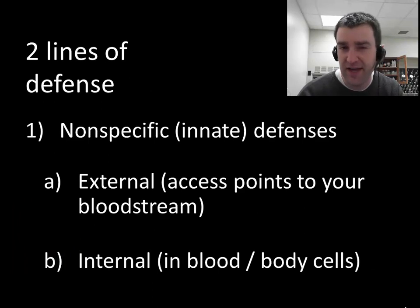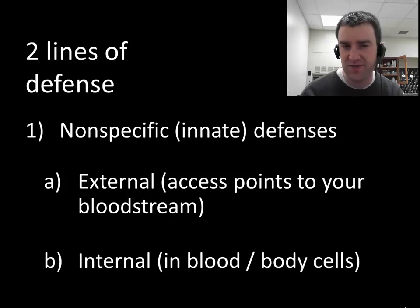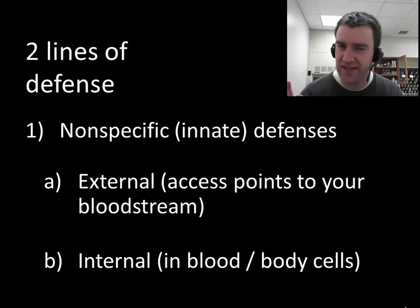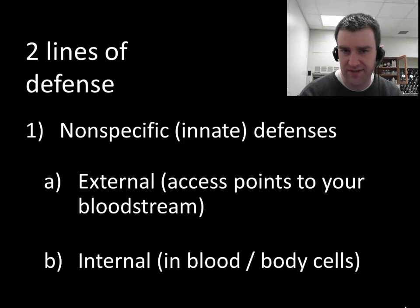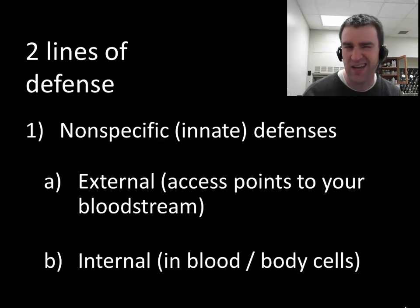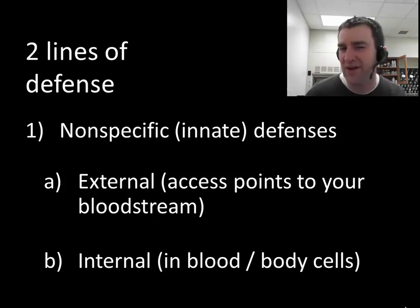I want to think about subdividing the immune system into two broad groups. We can think about mechanisms your body has to defend against threats non-specifically — mechanisms that broadly protect your body against a spectrum of pathogens without specifically attacking a particular type. I'm going to further subdivide this into external defenses, strategies that block pathogens from getting into your bloodstream to begin with, and also internal defenses inside your bloodstream.